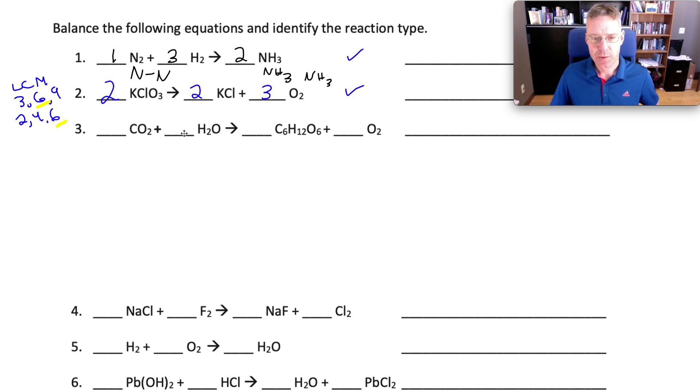On to the third reaction. A little bit more complicated. We have multiple atoms and oxygen all over the place. My suggestion would be to tackle oxygen last. Carbon is the only other non-ONH atom. We tend to do ONH at the end. And particularly in this case, oxygen last. There's only one carbon in CO2. There's 6 in our sugar. C6H12O6 is a simple sugar. So I can balance my carbon by putting a 6 in front of the CO2.